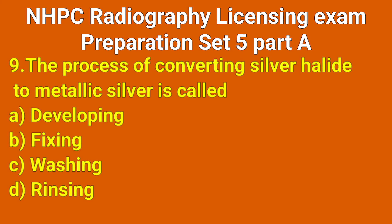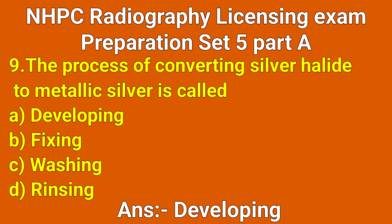Question number 9: The process of converting silver halide to metallic silver is called which option? Correct answer: option A, developing.